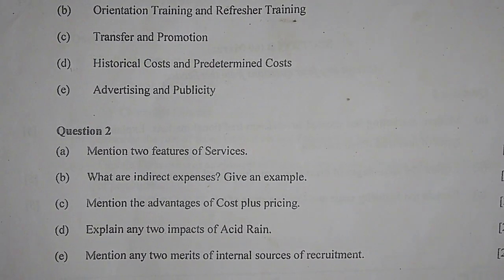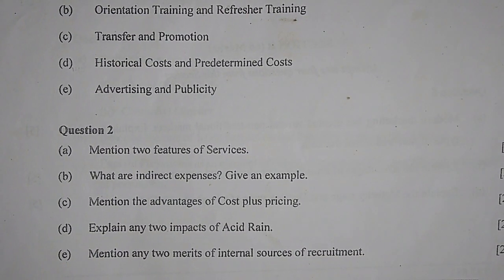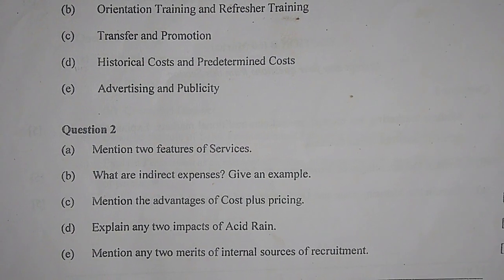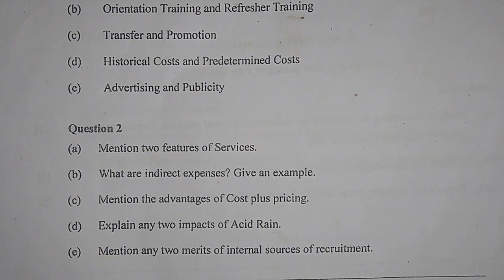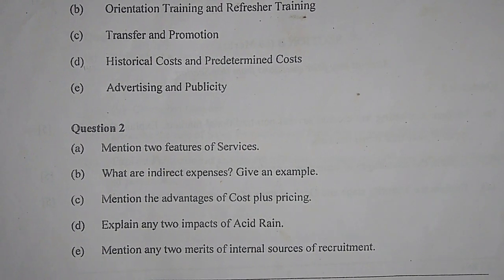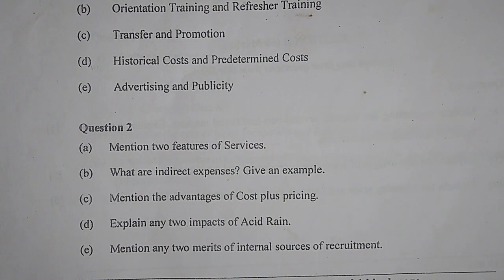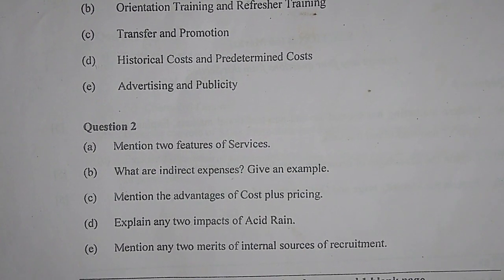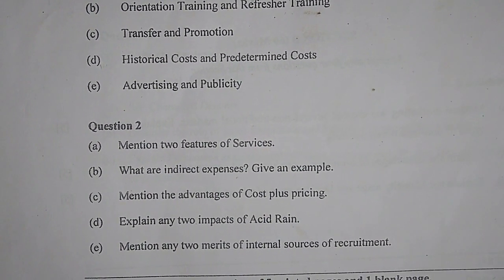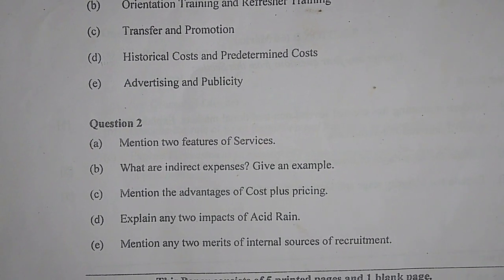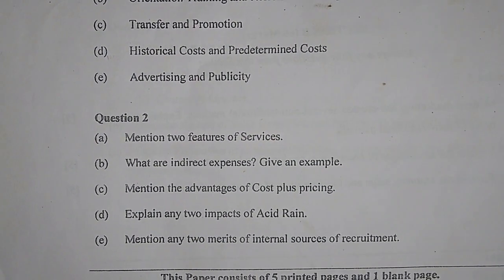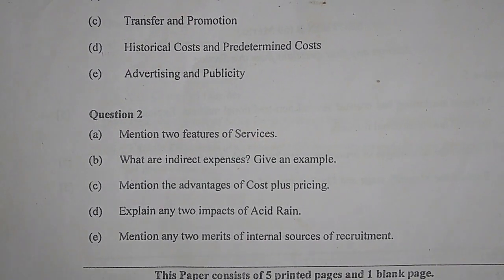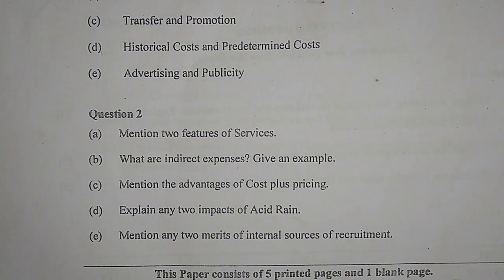Part D — Explain any two impacts of acid rain. First, plant life gets harmed. Second, it causes harm to buildings and monuments — for example, the yellowing of the Taj Mahal.